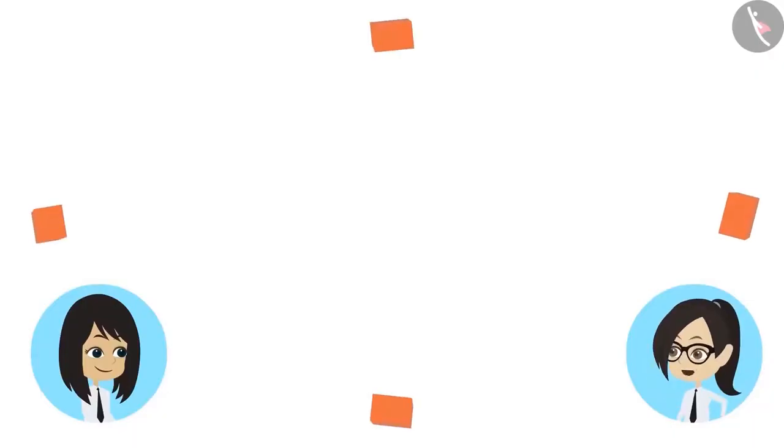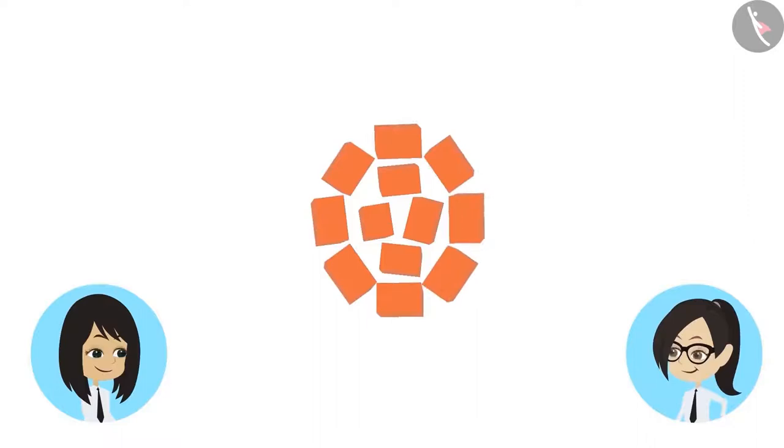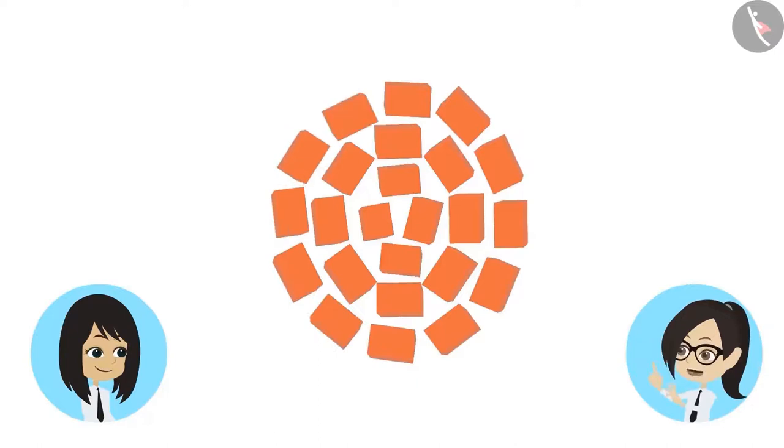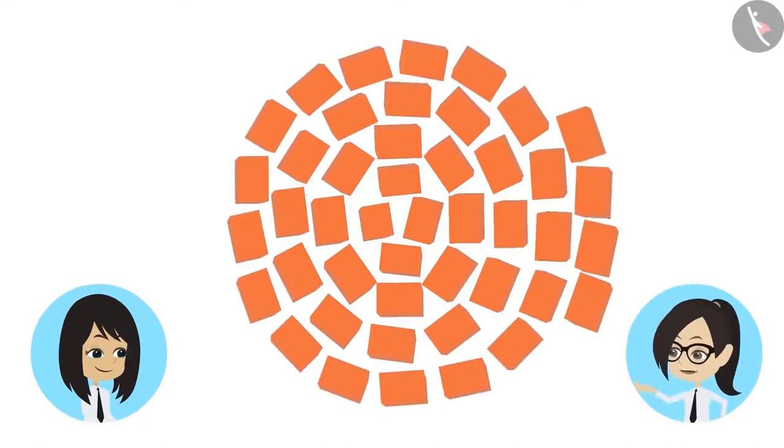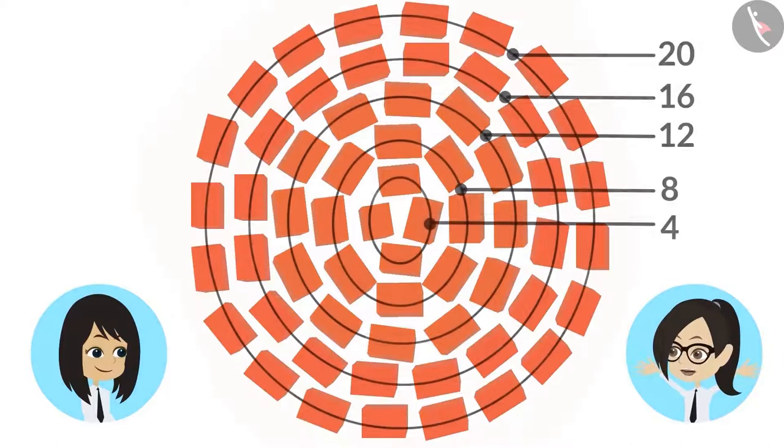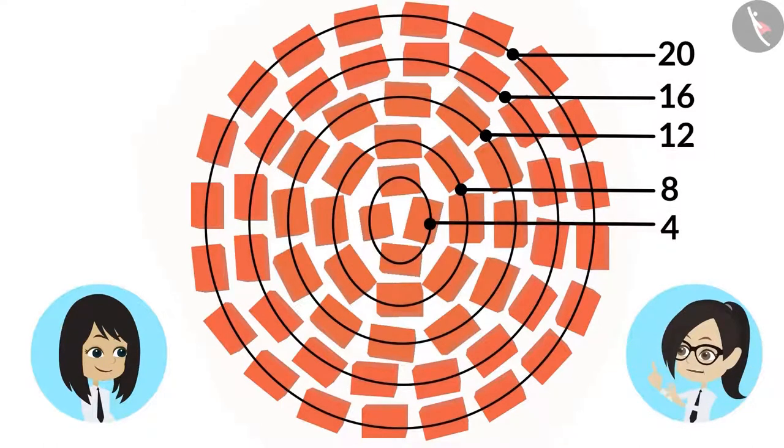Let us first keep these four bricks like this. Now let's make a circle of bricks around them. Then make another circle of bricks around them. Then another and then another one. Look, it became a circular pattern.